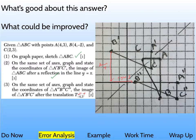So basically what happened here is this person did a translation of three negative four, not negative four, three. They got the X and the Y confused on that one.